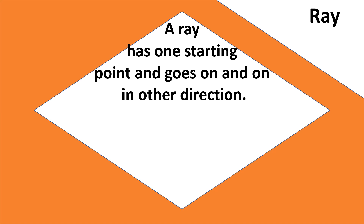In other words, a ray has only one endpoint, which is its starting point. For example, the point from where a ray starts is O, and here is another point on the ray which is point A. We read it as 'ray OA' and write it with the ray sign above OA.